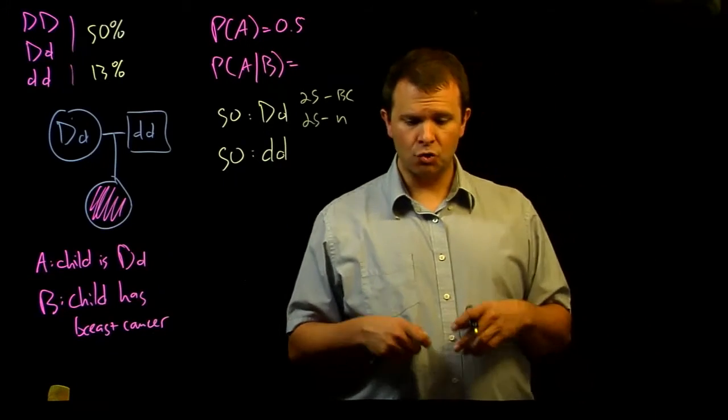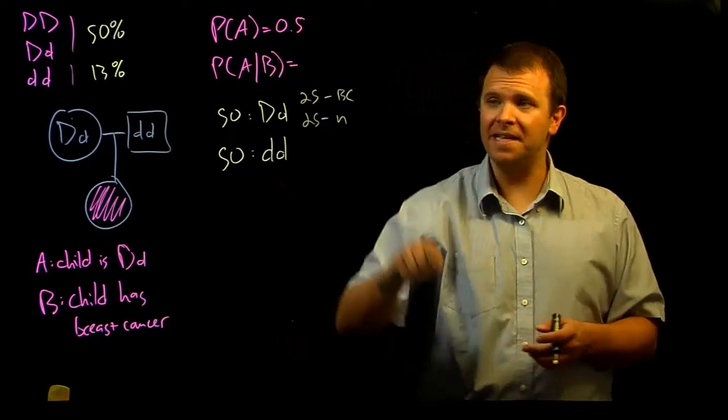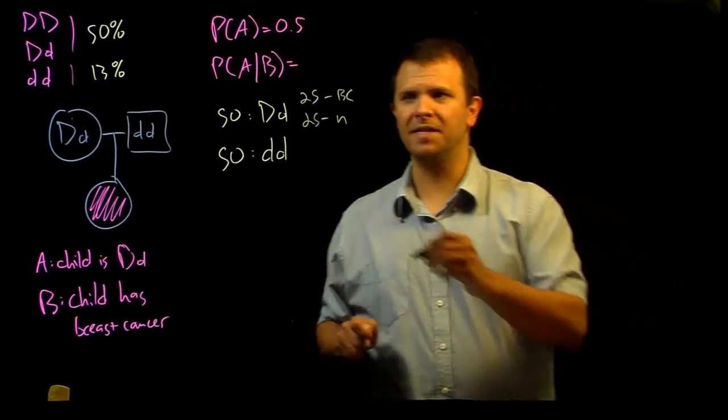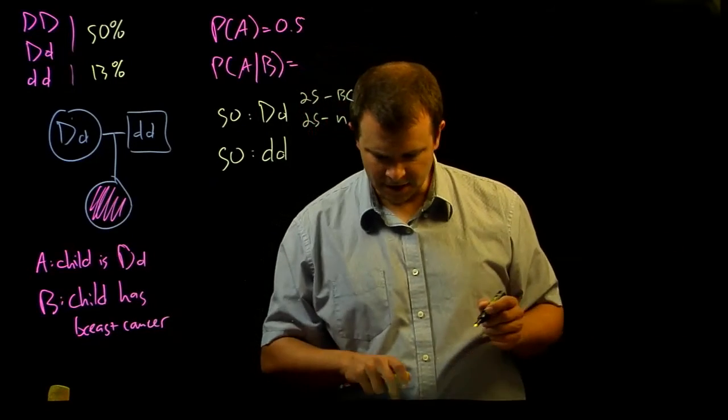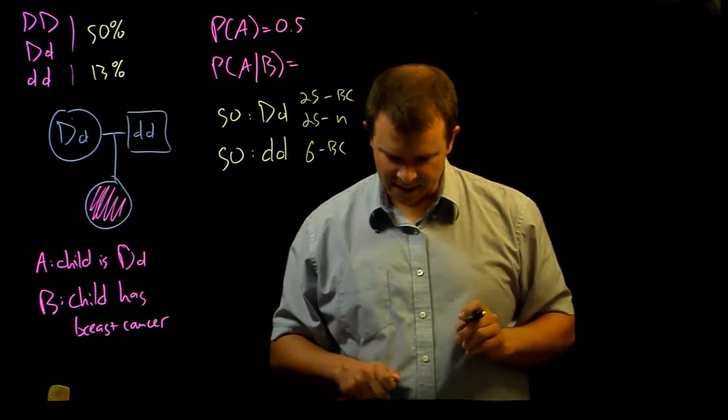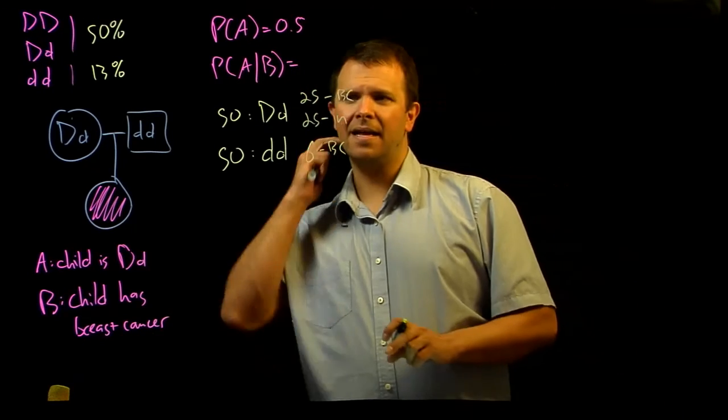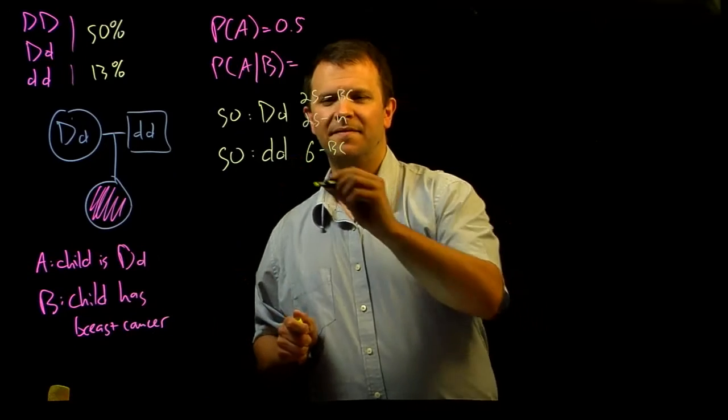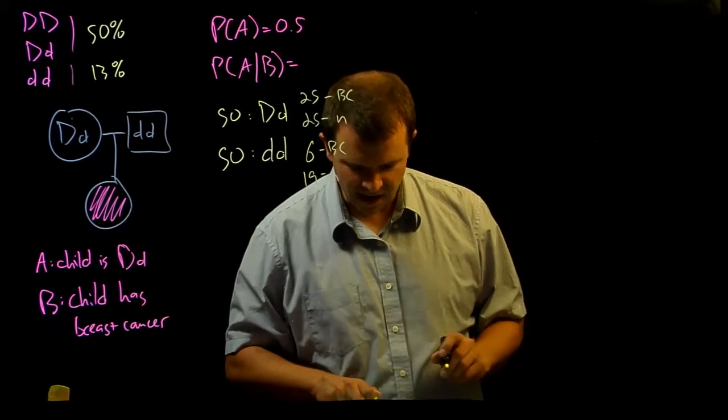And of the 50 children that are homozygote recessive, 12 or 13% of these children will eventually develop breast cancer. And so, here, that's only 6 develop breast cancer and 25 minus 6 is 19 do not.